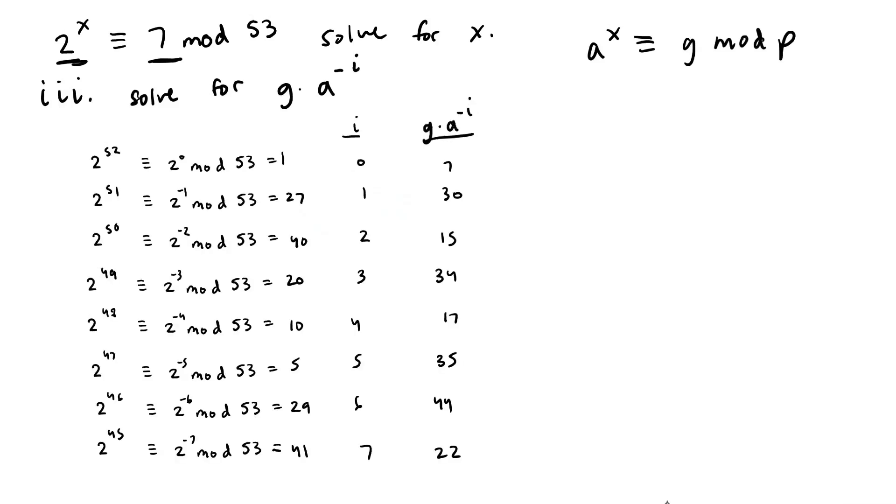So this is our final chart for step three and we have solved for all of our g times a to the negative i values and we have 7, 30, 15, 34, 17, 35, 44 and 22. So this is our second set of values and remember from earlier I said the values from step 2 were L1, these will be L2.